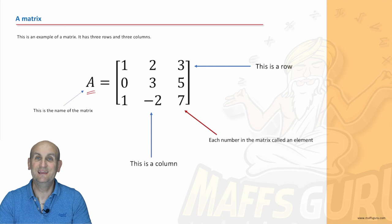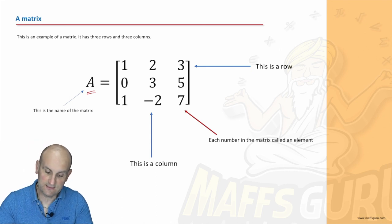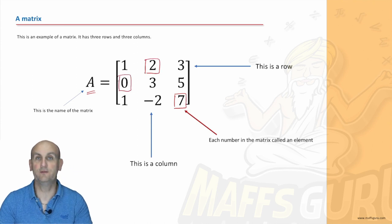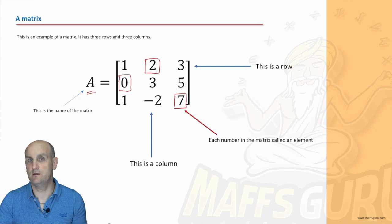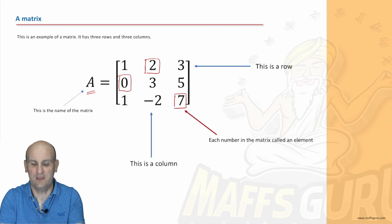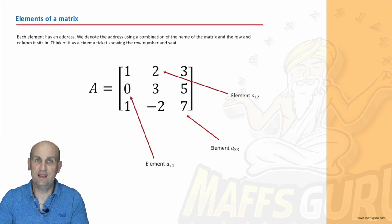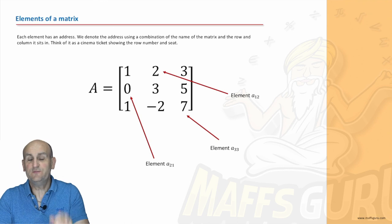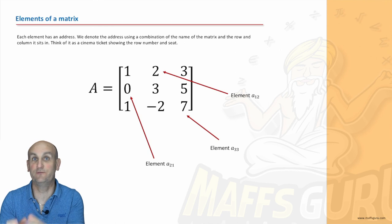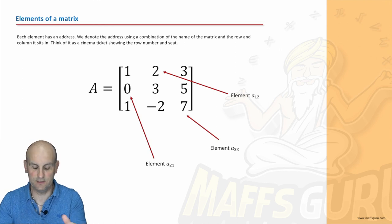Now, each of these numbers is called an element, right? So, as I say here, this number 7 here is an element. That number 2 is an element. That number 0 is an element. So, that particular matrix has 9 elements. And believe it or not, elements have addresses. Yes, not like a post or address like we have here. But, we'll come back to that now.